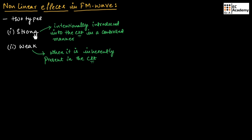A non-linearity is said to be strong when it is intentionally introduced into the circuit. When non-linearity is intentionally introduced in the circuit in a controlled manner, such type of effect is known as strong non-linear effect. Non-linearity is said to be weak when it is inherently or naturally present in the circuit, and such type of non-linearity is known as weak non-linearity.